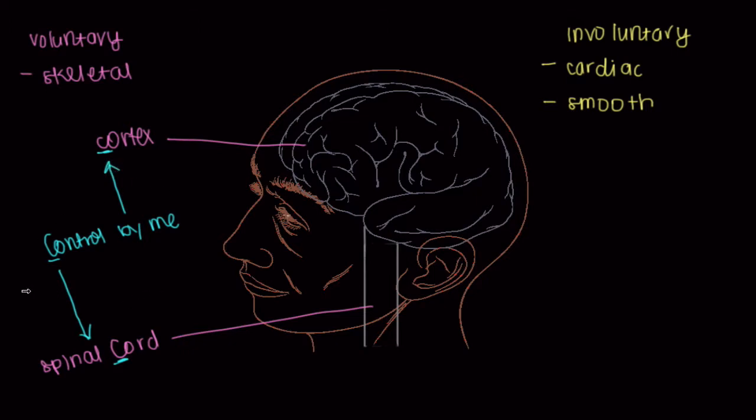Now, what about if we're talking about involuntary control? This part that I'm going to draw sort of briefly, that sits kind of back here behind the spinal cord, and then kind of goes in there, that guy is called the brain stem.